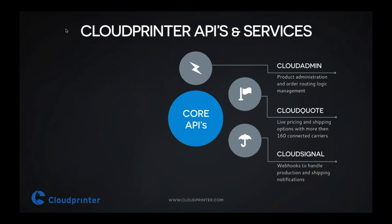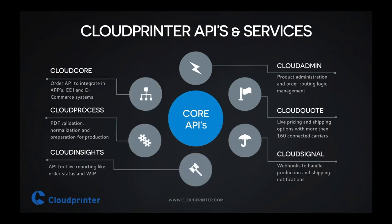I'll go through some of the elements that our solution is based on — a number of services and APIs. The major ones are Cloud Core, which is what we use for placing orders and quotes, and Cloud Processing, which is a background service that takes care of orders once they're in the Cloud Printer system and makes sure to communicate with the productions.